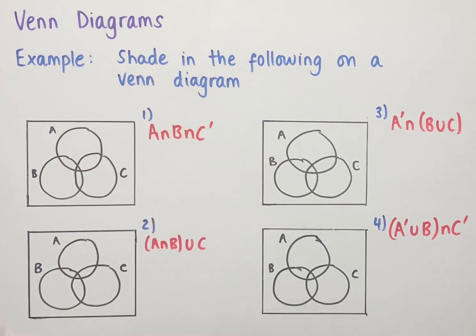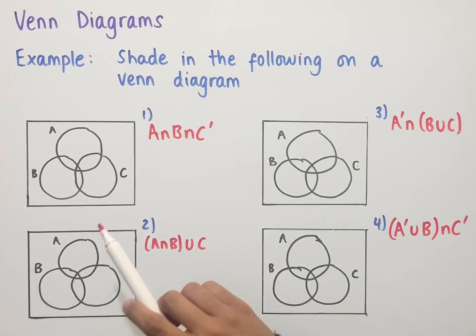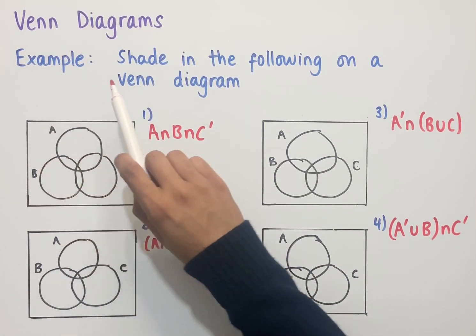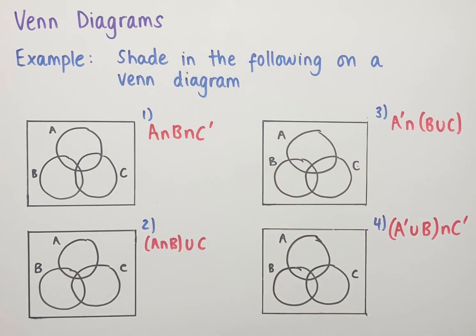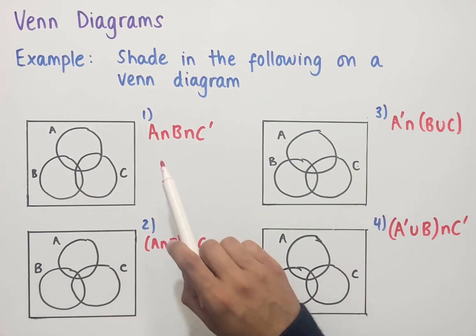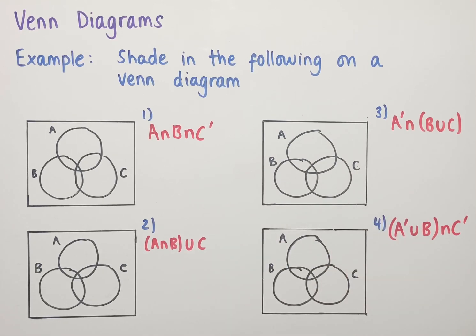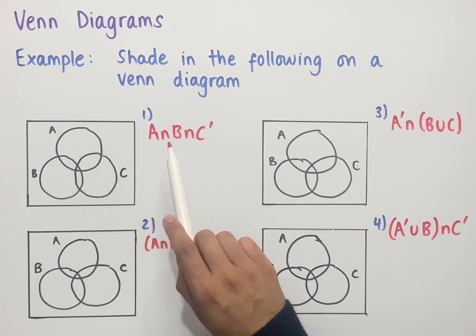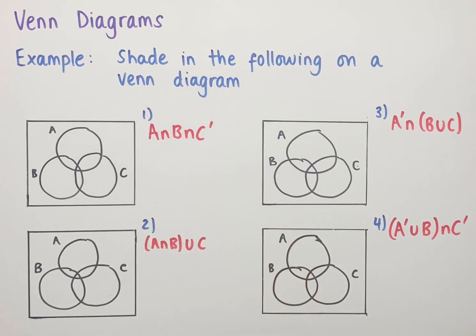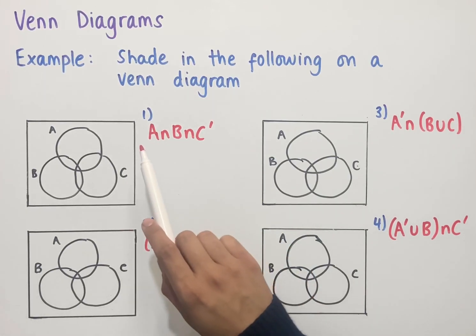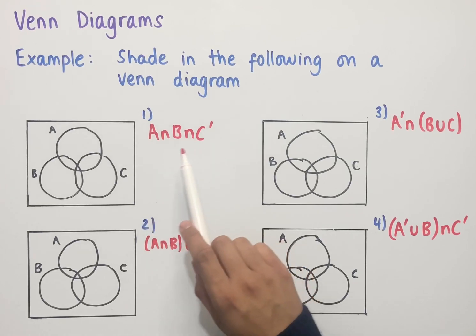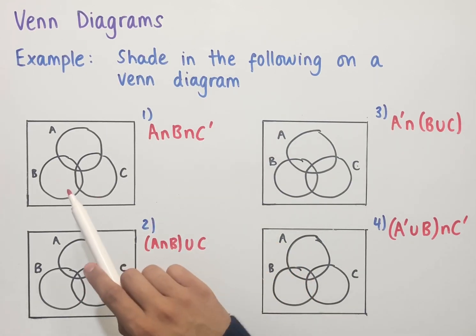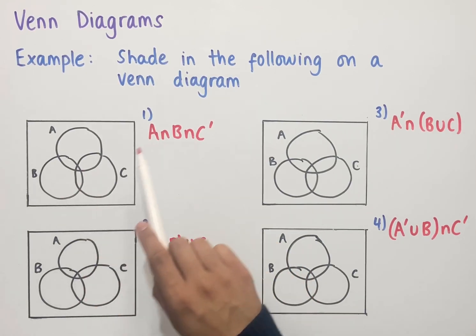Let's look at Venn diagrams that include three circles. The example says to shade in the following on a Venn diagram. We've got four Venn diagrams here, and some set notation for which we're going to shade in each of these. We're going to start from the left and work our way through each symbol until we've shaded the Venn diagram.